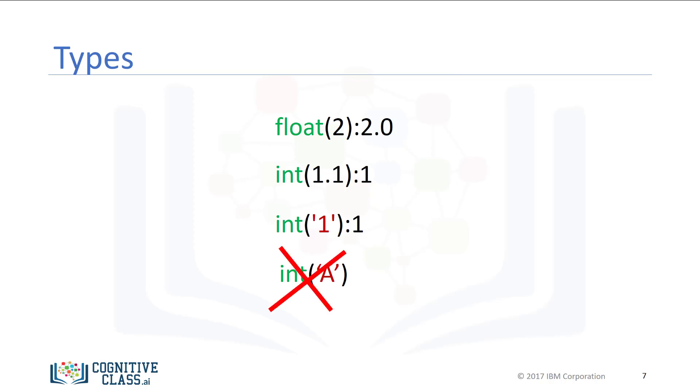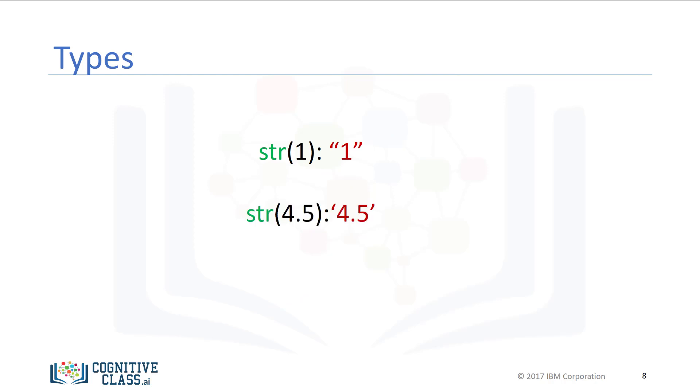Check out more examples in the lab. You can convert an int to a string, or a float to a string. Boolean is another important type in Python. A Boolean can take on two values. The first value is true. Just remember we use an uppercase T. Boolean values can also be false, with an uppercase F.